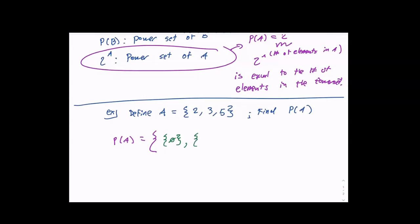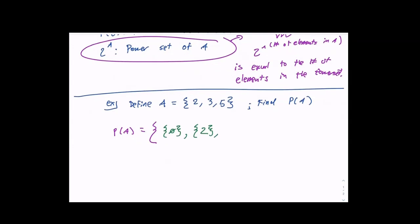Now let's find all of the sets of one element — sets that have one element and are a subset of A. Those would be: {2}, {3}, and {5}.